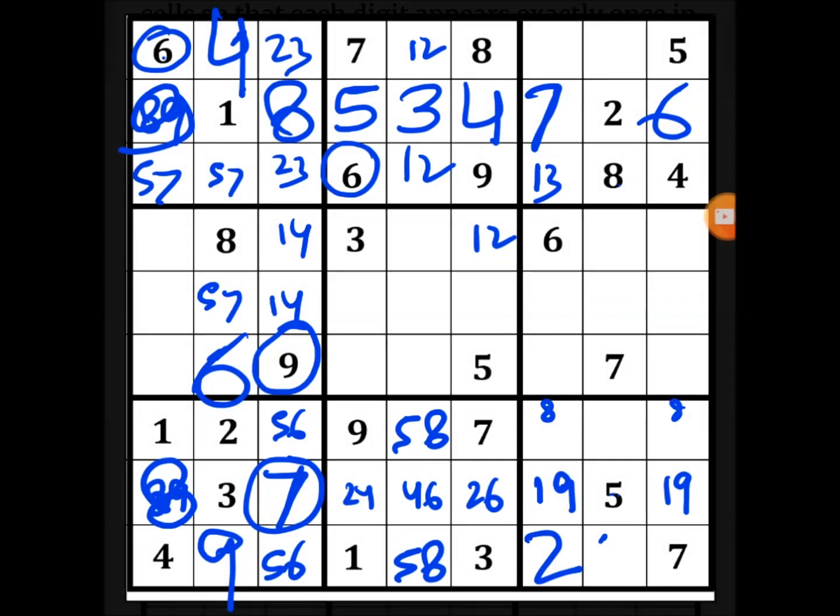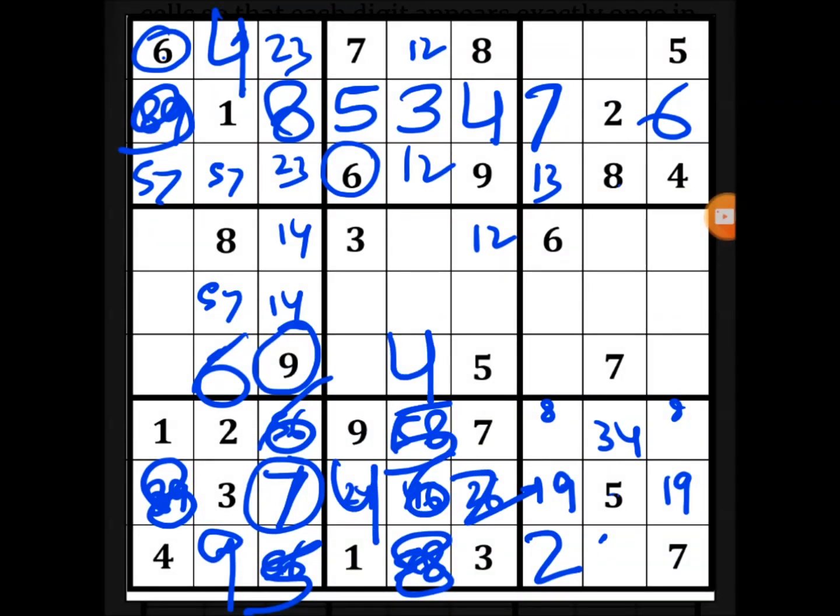That means this is 5, this is 6, this is 5, this is 8, this is 3, 4, this will be 4, this will be 6, this will be 2, this will be 4, this will be 7, 9, this will be 2-8 pair that means this is 1, this will be 6, this will be 6, this will be 1, this will be 4, this will also be 1, 1, so this is 1, this is 1.